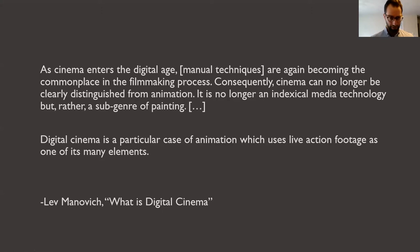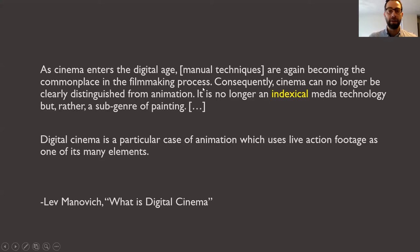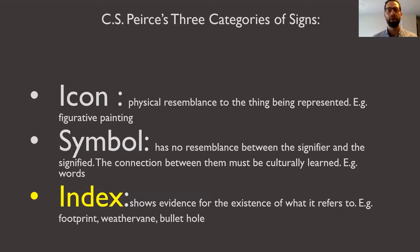If you're going to pick apart the logic of this claim, you might fixate on a couple terms. The big one is 'indexical.' What is the index? We want to think about the difference between the idea of index and the idea of the manual — and in the logic of this claim, those things are opposed. The term 'index' is a concept borrowed from the American pragmatist philosopher C.S. Peirce. We understand the significance of index by comparing it to the other two kinds of signs Peirce catalogued: icon and symbol. An index is a kind of sign that shows the evidence for the existence of what it refers to.